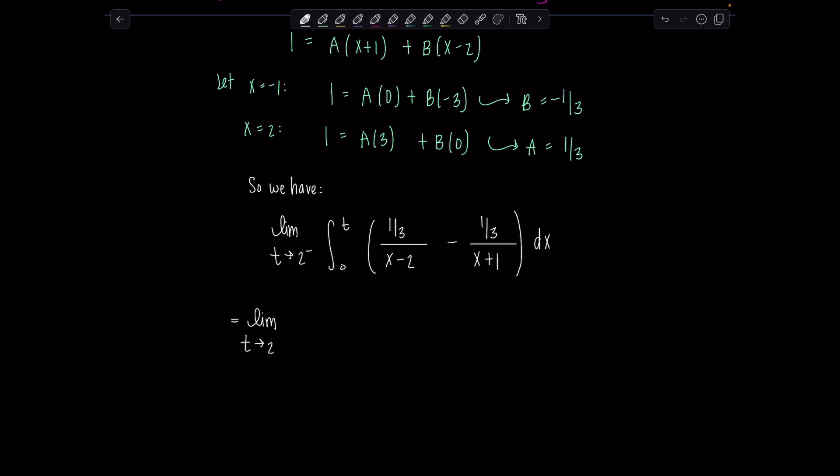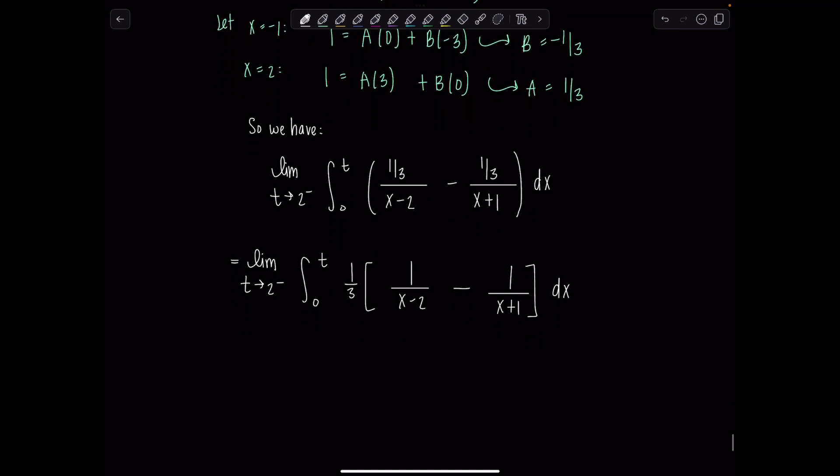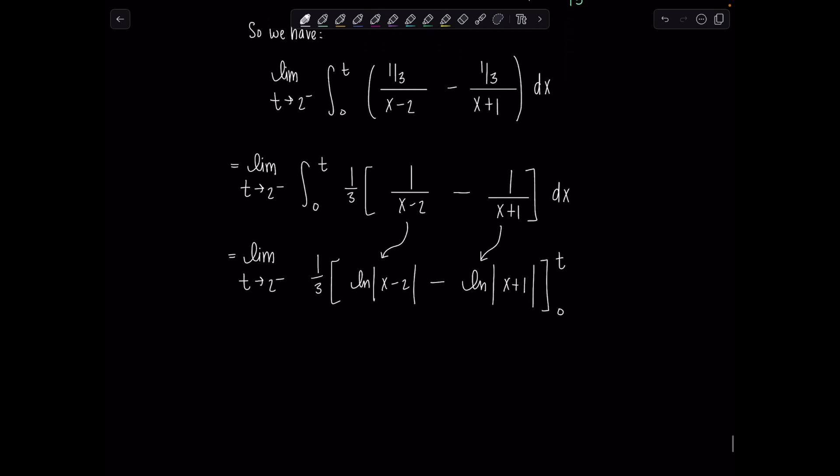Great. So 1 third, 1 over x minus 2 minus 1 over x plus 1. Isn't that just so much better looking? Both of those we can anti-differentiate, no big deal. So this is the limit t approaches 2 from the left. 1 third, anti-derivative of 1 over x minus 2 is going to be natural log absolute value x minus 2, minus, and then similar here, we'll have natural log absolute value x plus 1. And then this all gets evaluated from 0 to t. And keep the 1 third out. We don't need 1 third in here making things looking messier than they need to be.